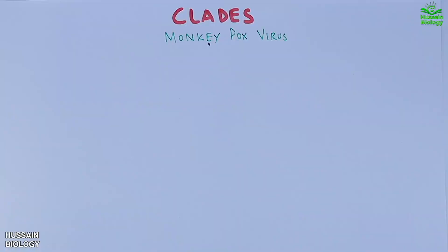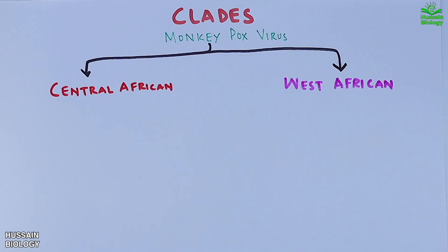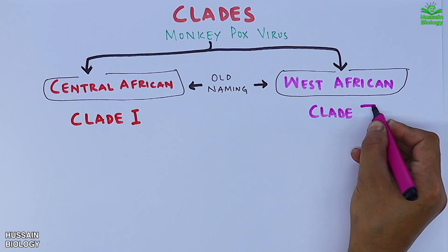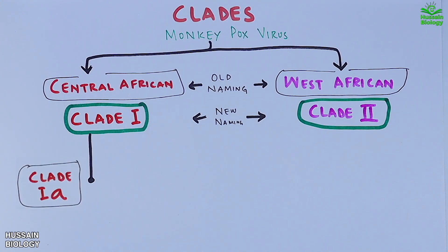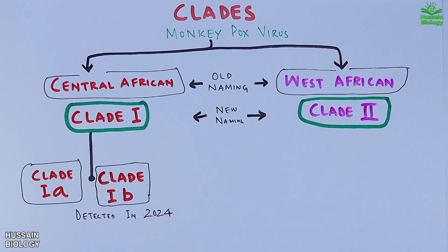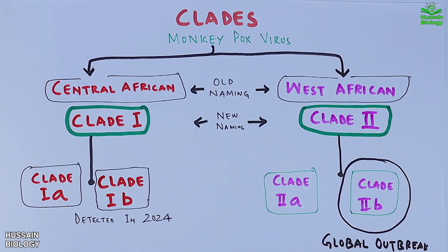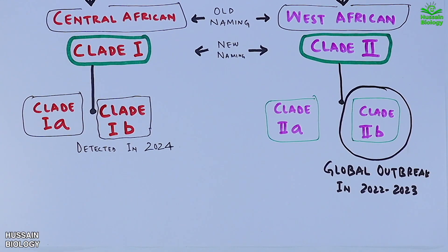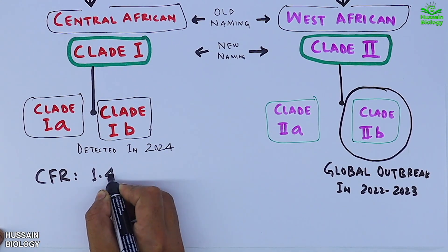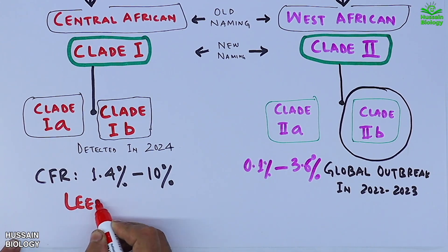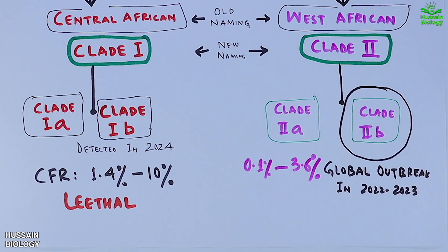Now let's look at the clades of this virus. We have the Central African clade and the West African clade in the old nomenclature. Now the Central African clade is termed Clade 1 and the West African clade is termed Clade 2. Clade 1 has subclades 1a and 1b — Clade 1b was detected in 2024. Clade 2 includes subclades 2a and 2b. Clade 2b had global presence when it proved a global threat in 2022 and 2023, and is also an international concern in 2024. The case fatality rate for Clade 1 ranges from 1.4% up to 10%, whereas for Clade 2 it ranges from 0.1% up to 3.6%, making Clade 1 more lethal.